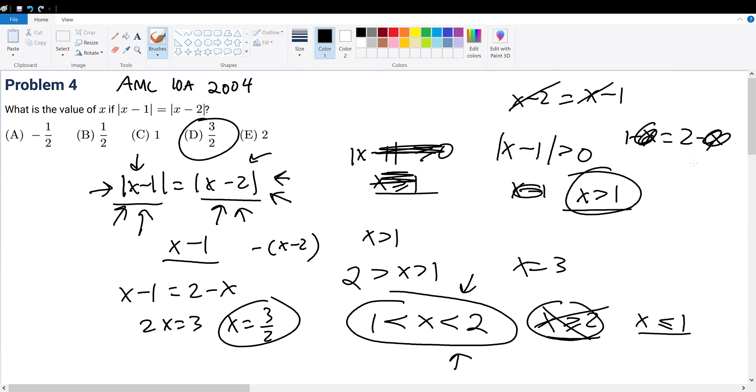And again, we cancel out the negative x. 1 equals 2. That is also wrong. So therefore, we only have a specific range of x being between 1 and 2 to have a unique and valid solution of 3 over 2.